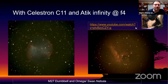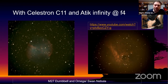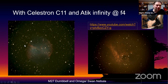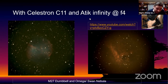With the C11 at F4 but with more aperture, and learning how to work with the histogram inside the software, you start to get better results. This is the Omega/Swan Nebula. And this is M27 — I want you to look at this image of M27 with the Atik Infinity at F4 in the C11. You'll see it again with the 294 very shortly, and I want you to note the difference between this image and that one.